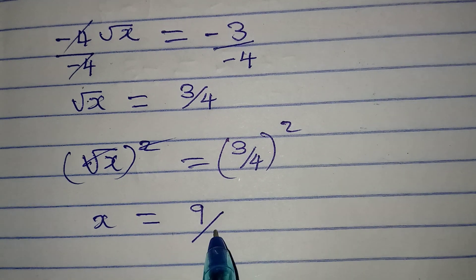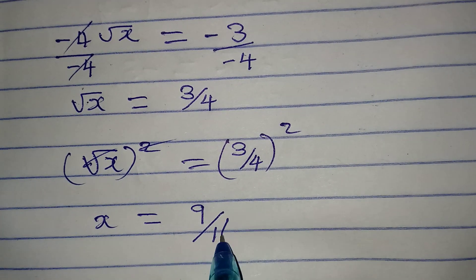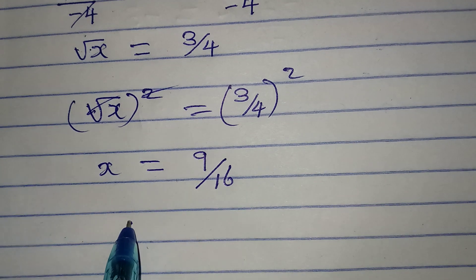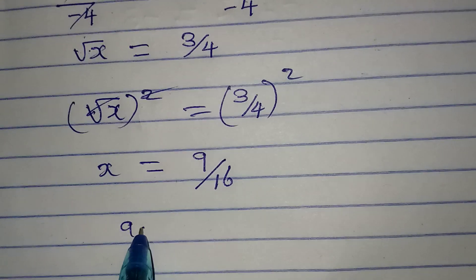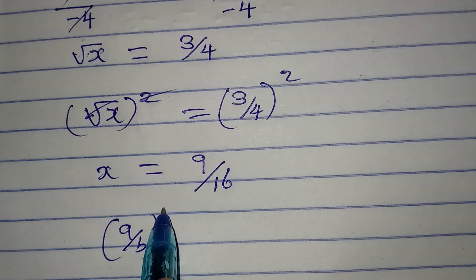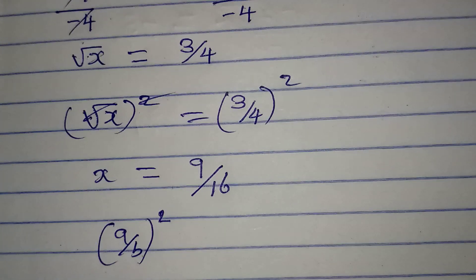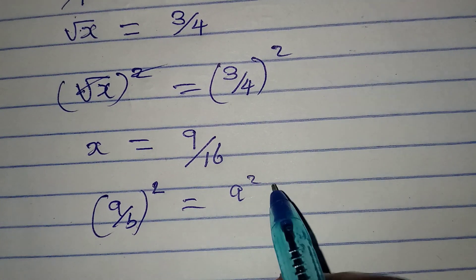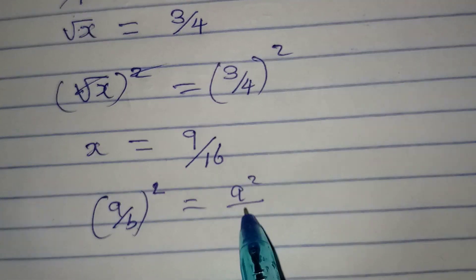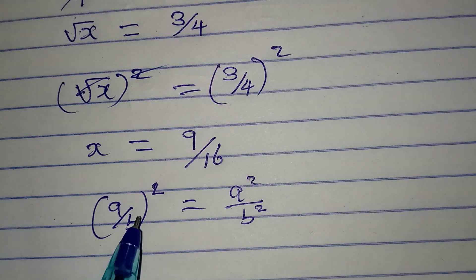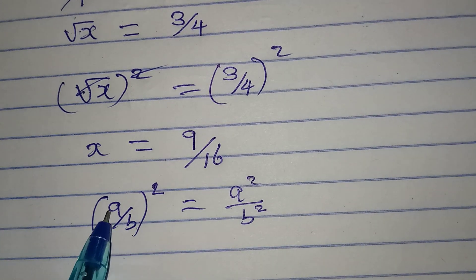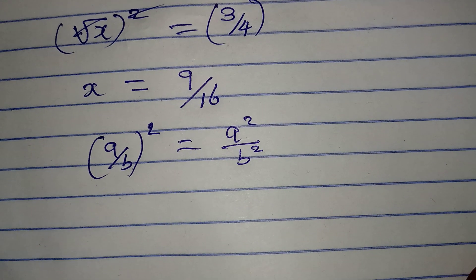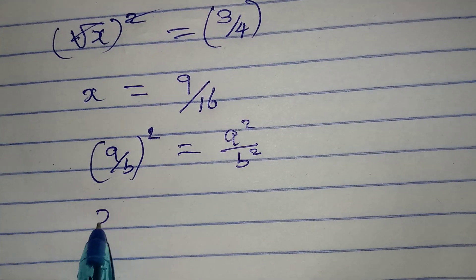This gives us 9 over 16, because if you have a over b, all squared, this is the same as a squared over b squared — the square applies to both the numerator and the denominator.